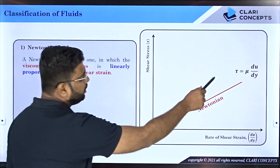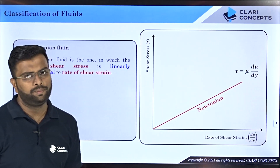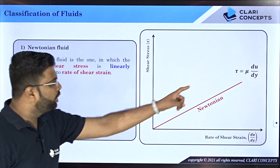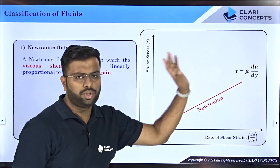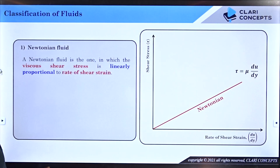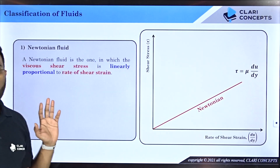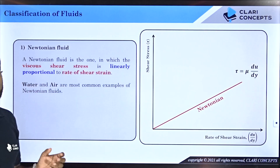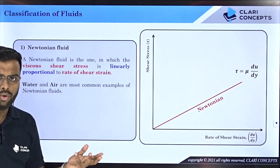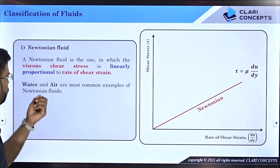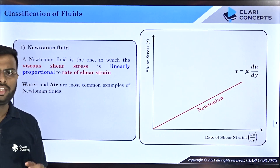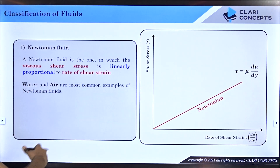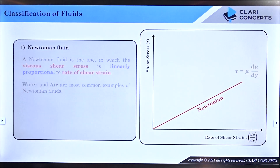These fluids always obey Newton's law of viscosity: τ = μ (du/dy). All fluids which obey Newton's law of viscosity are categorized as Newtonian fluids. Simple examples are water and air.